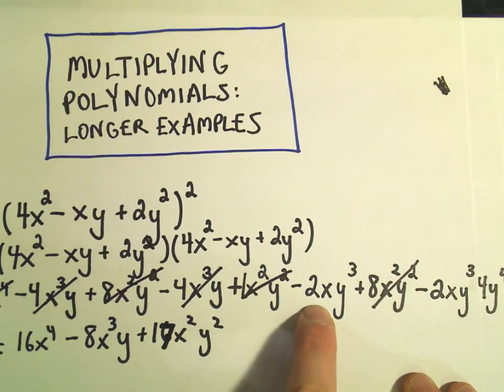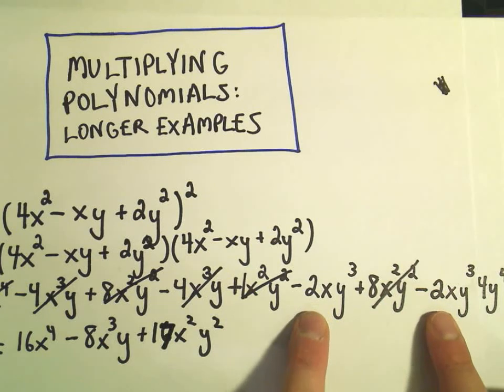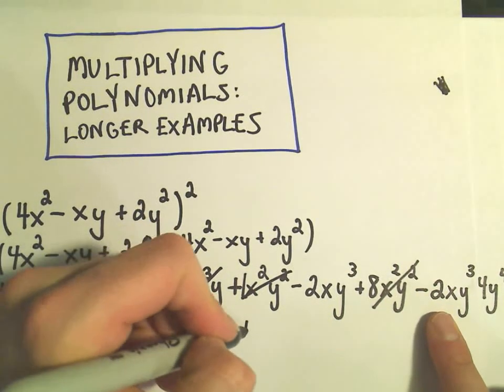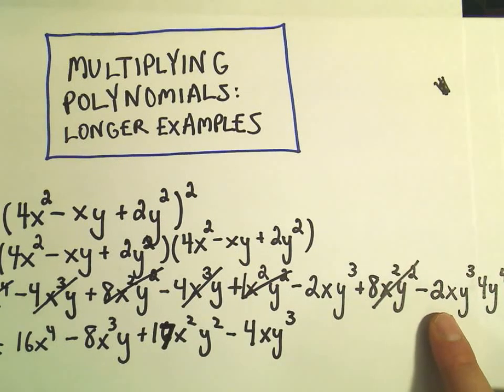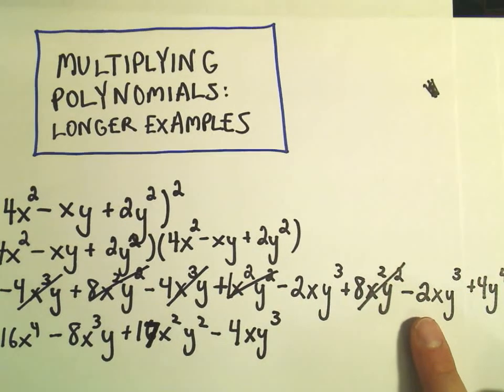We've got a negative 2xy³ and another negative 2xy³. That'll give us negative 4xy³. Again, we're just recognizing like terms and then doing arithmetic out front.